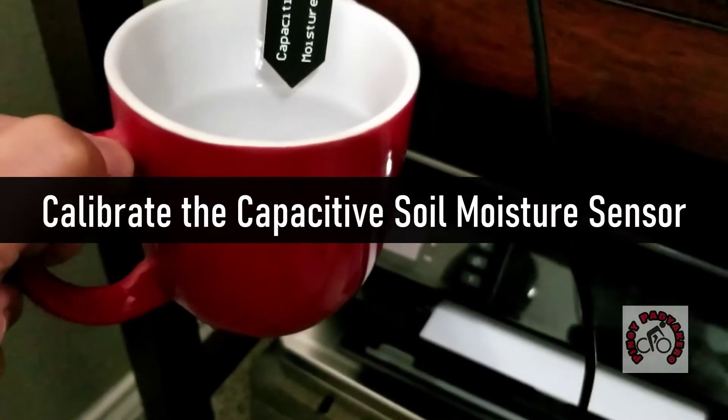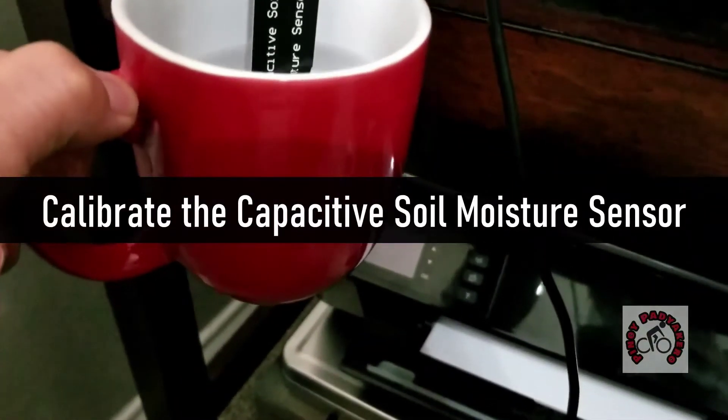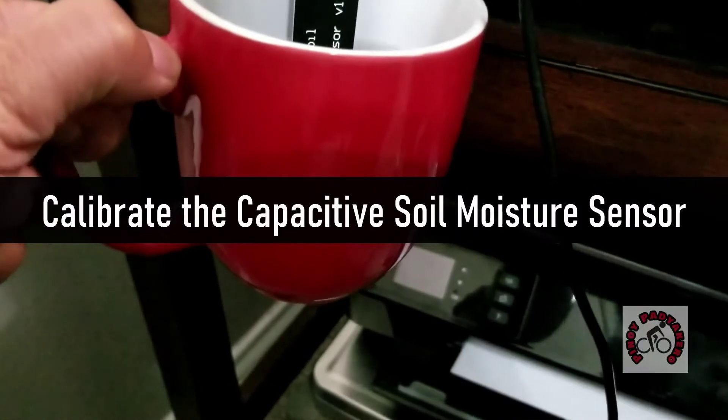Immerse the sensor in a cup of water and note the value in the serial monitor. This will be the wet value.